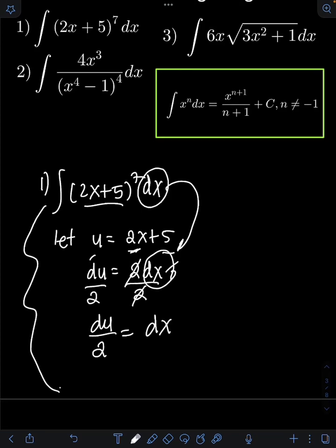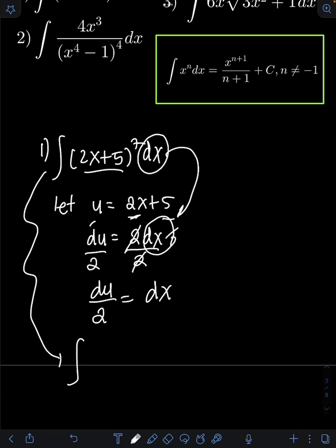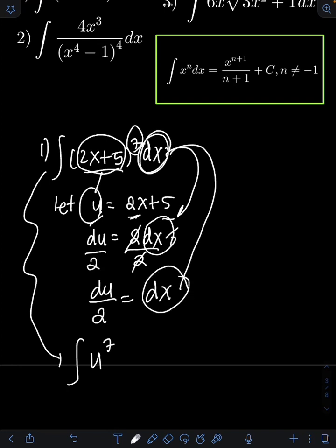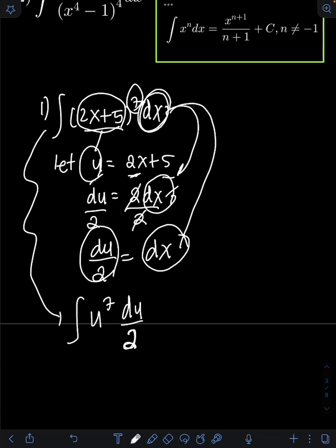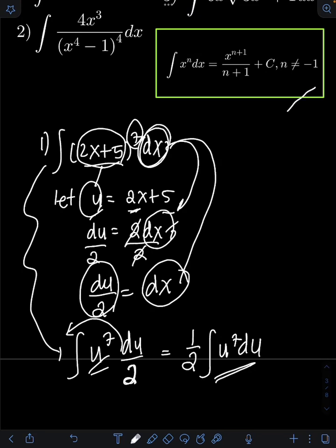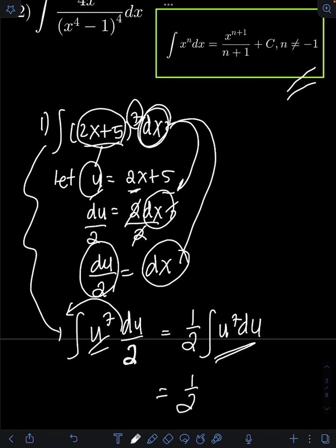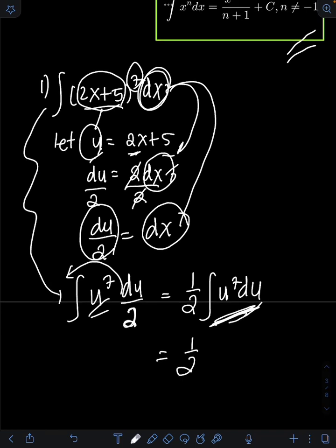Now substitute into the original integral. We have 2x plus 5, which is now equal to u, still raised to the 7th power, and dx is now equal to du over 2. The 1/2 is a constant, so we put it in front of the integral. So we have 1/2 times the integral of u to the 7th du. We can now apply the power rule: integral of u to the 7th is u to the 7 plus 1, over 7 plus 1, plus C.